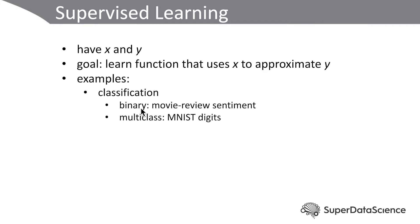If we have more than two outcomes — more than two classes — we call that a multi-class classification problem. An example would be handwritten digits. There's a famous dataset called the MNIST dataset, which consists of tens of thousands of examples of digits 0 through 9 written by hand. A common multi-class classification problem is to have the pixels of those handwritten digits as the input X, and then the outcome Y is: what digit is that? Is it a 4, a 6, a 7? That's a multi-class problem because we have 10 possible digits.